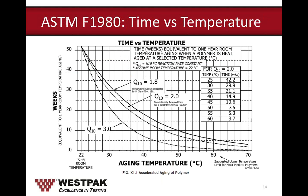Here's a graph from ASTM F1980 showing the relationship between time and temperature. Notice that as you increase the aging temperature, the time inside the chamber decreases. Every 10 degrees C increase above the ambient temperature of 25°C reduces the time by half. For example, 25°C takes about 42.2 weeks; at 35°C it takes 21.1 weeks — half the time.